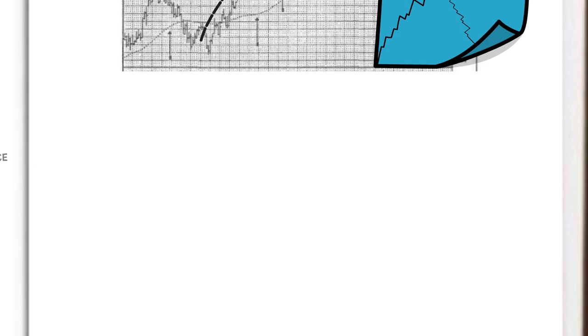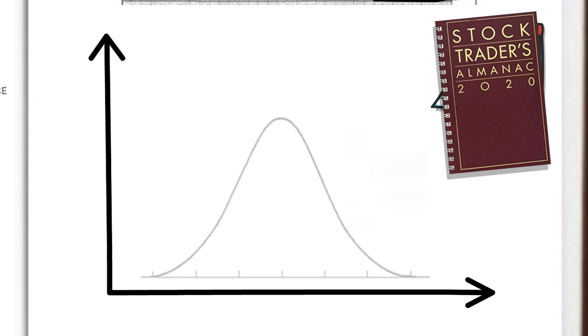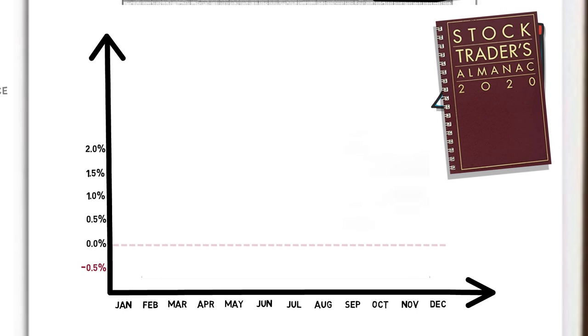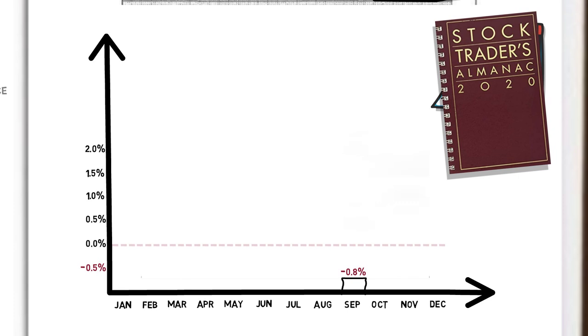Another interesting tool Schwartz uses when making a trading decision is the historical performance of a given calendar period. He regularly refers to the trader's almanac, which provides data on the distribution of returns. As an example, here we can see the average performance for each month over the past 20 years. We can see September has historically given the worst average performance of minus 0.8%, whereas April has provided the best average return of 1.7%, and so on.